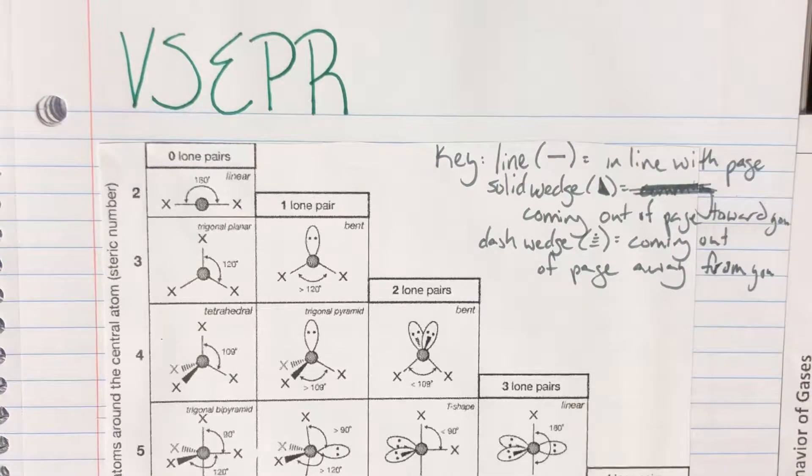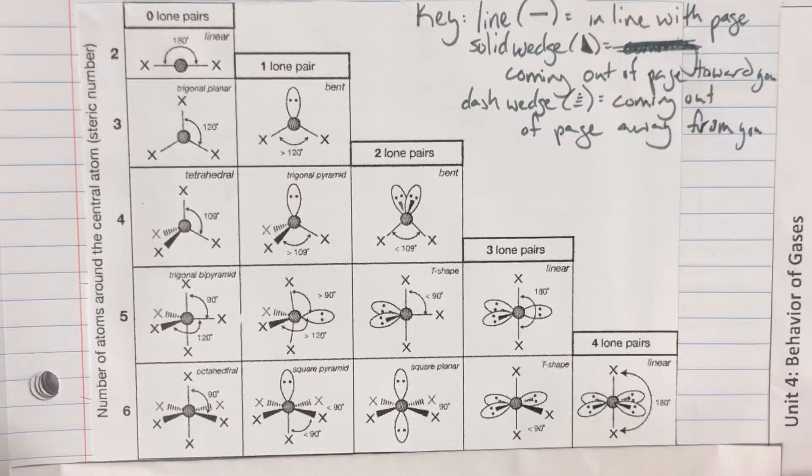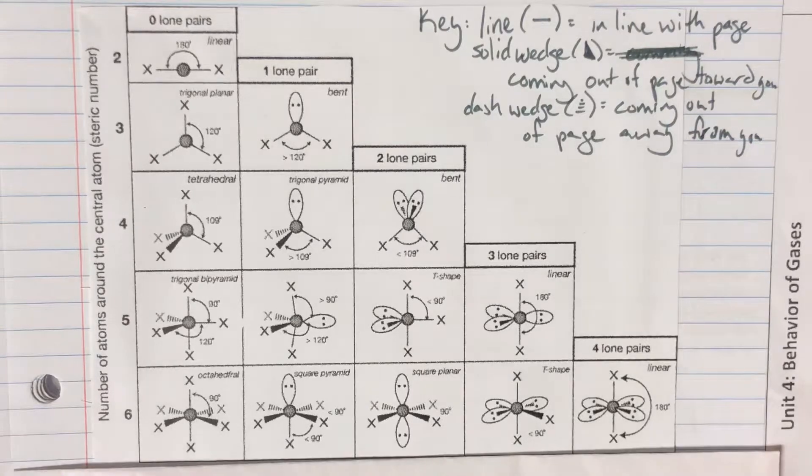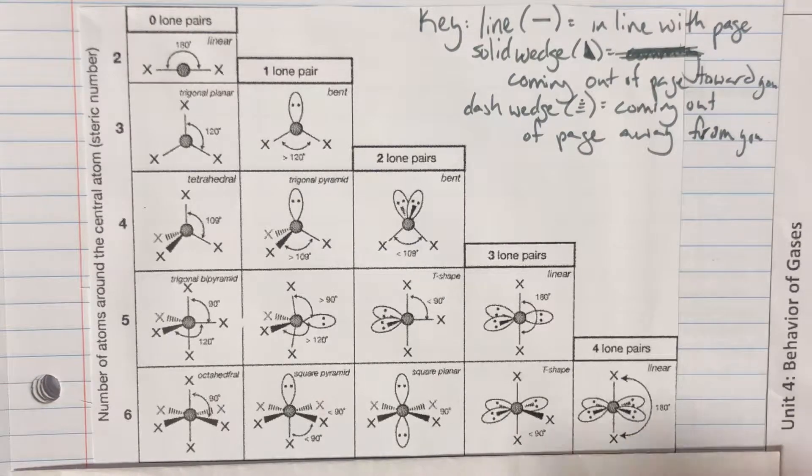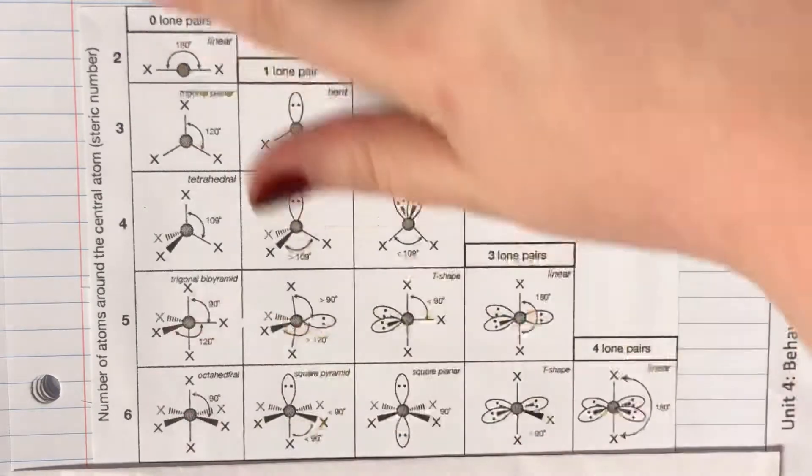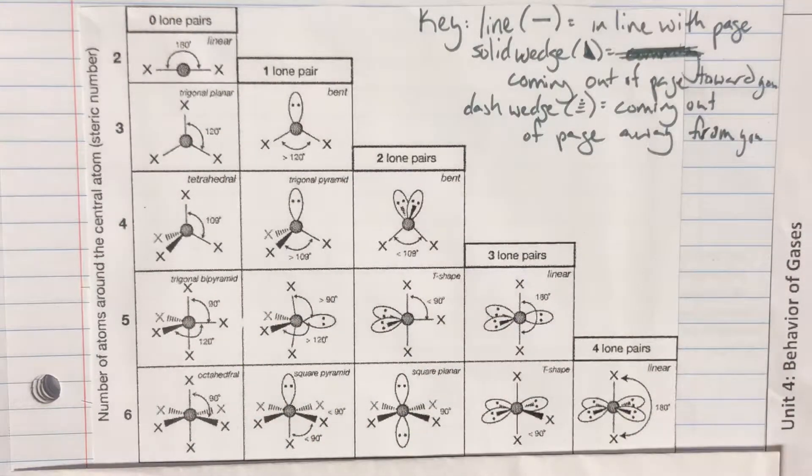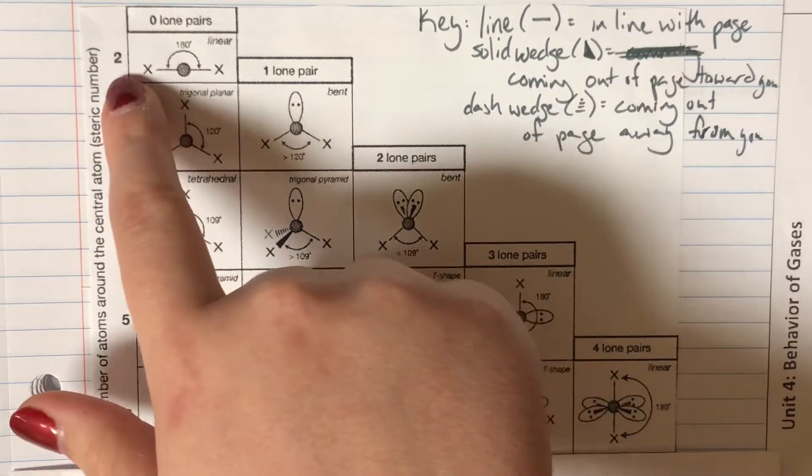First, we're going to look at a quick cheat sheet for how the different shapes take place, how you can figure them out from the Lewis dot structures, and what this actually means. Here on the left-hand side we have the number of atoms around the central atom, which is going to be my steric number. So if I have two atoms around my central atom, then I'm going to be steric number two.